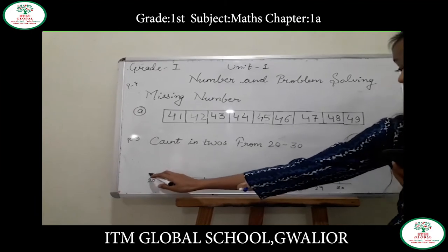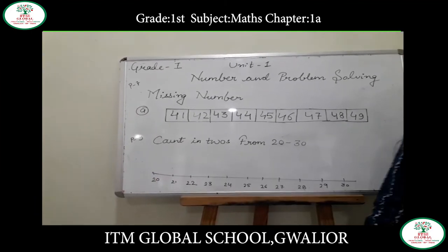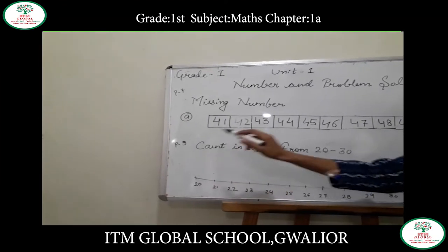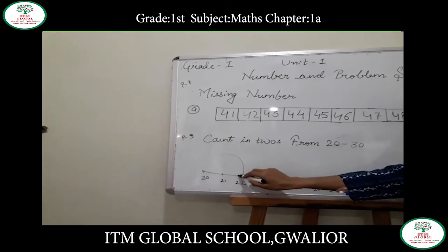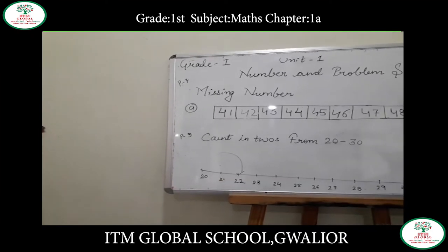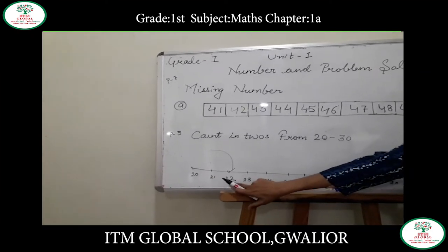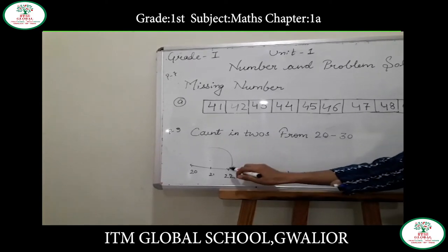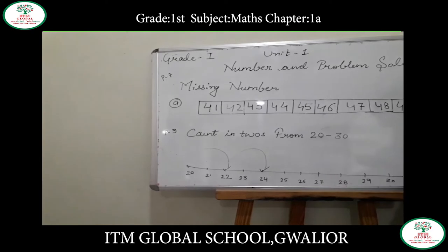For example, starting at 20, if you count in twos: 21 and 22 — you count every second number and skip the first. After 22, skip 23 and the second number is 24. So counting in twos works like this.